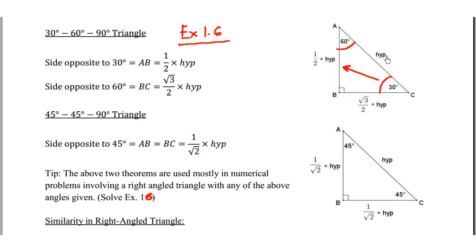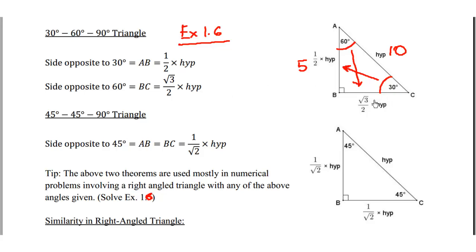So whatever the hypotenuse is, that side is half of it. For instance, if the hypotenuse is 10, then side AB, which is opposite to 30 degrees, would be 5. And the side opposite to 60 degrees — in this case BC — is equal to (√3/2) multiplied by the hypotenuse. So (√3/2) × 10 = 5√3.